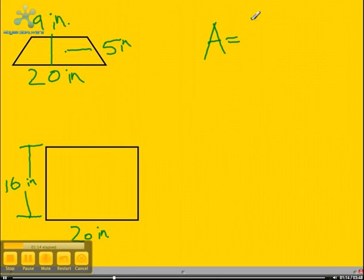Now that we've labeled it, we have to find the area of the smaller shapes. The area of the trapezoid is 1/2 the height times the first base plus the second base, which means 1/2 of 5 times 9 plus 20.